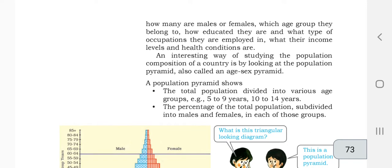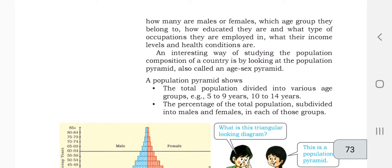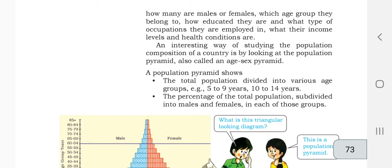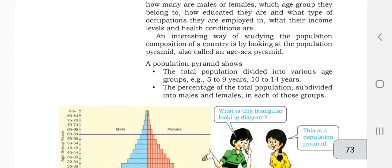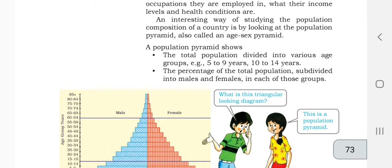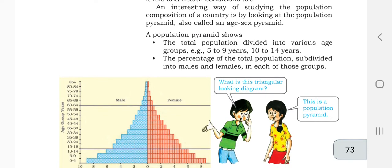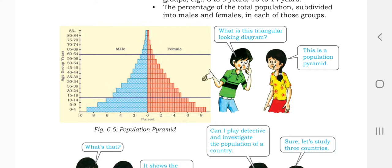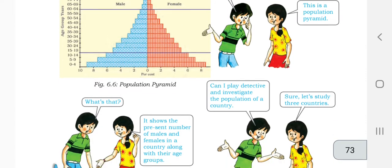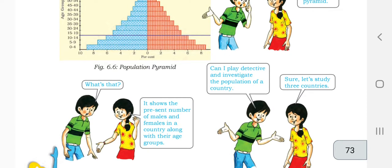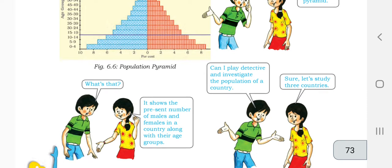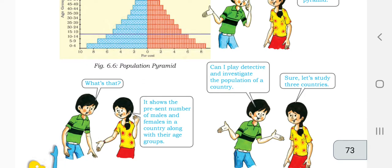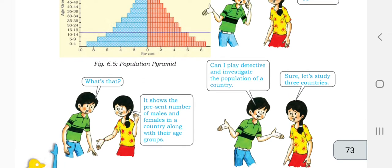An interesting way of studying population composition is by looking at the population pyramid, also called the age-sex pyramid. A population pyramid shows the total population divided into various age groups — for example, five to nine years, ten to fourteen years — and the percentage of the total population subdivided into males and females in each group. One side of the pyramid shows males and the other side shows females.